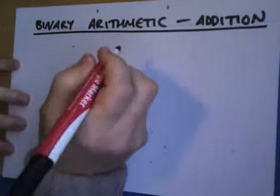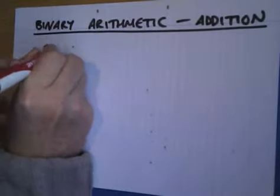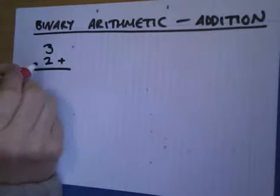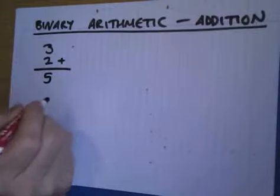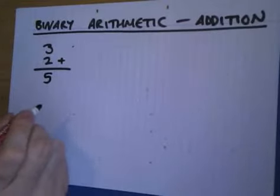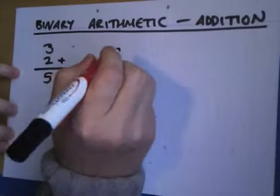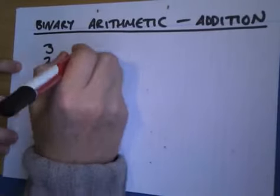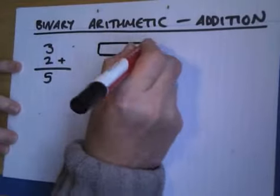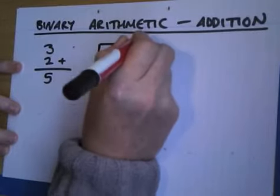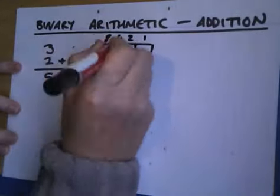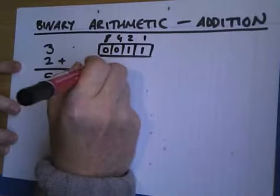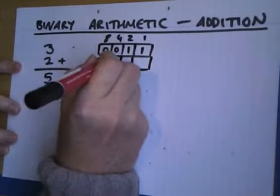Let's take two numbers: 3 plus 2. That's in base 10 obviously. 3 plus 2 as we well know is 5. Let's see how we do that in binary. So I'm going to convert these two numbers into binary. I'm just going to use a nibble because I only really need 4 bits. So 3 is a 2 and a 1. And 2 is like so.